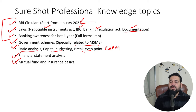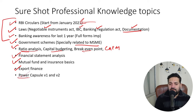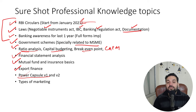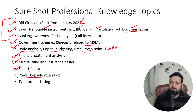Mutual fund and insurance basics — generally 1–2 questions are asked from this topic. Export finance is important; there is a basic 20-minute video covering it, and a Power Capsule V1 is already available in the course. For marketing — some students wonder why it matters — it may or may not appear, but anywhere from zero to 7–10 questions could come from marketing.